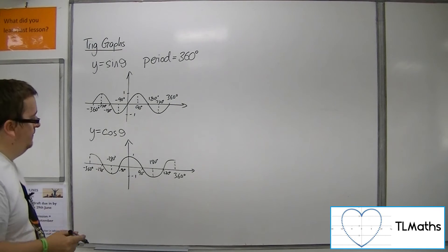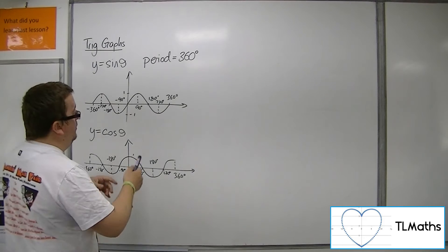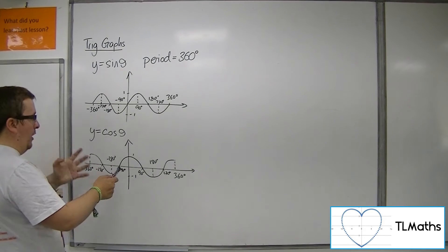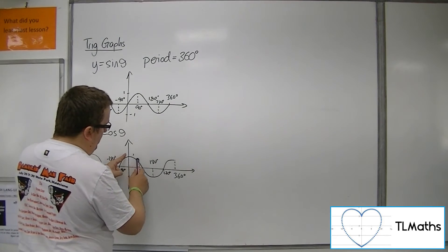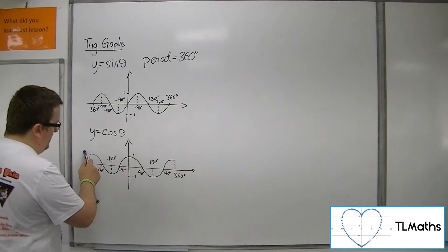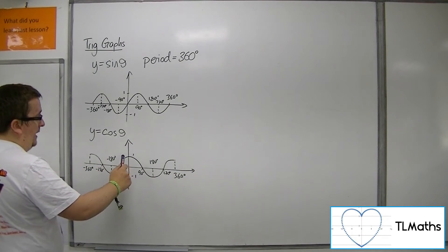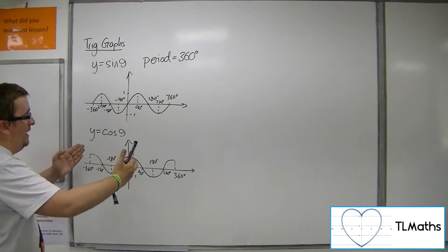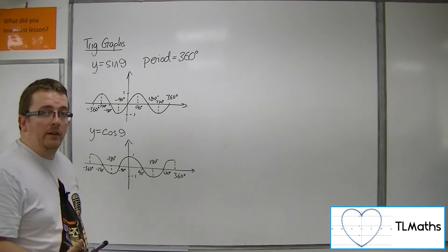Now this curve, the cosine curve, you can see that this piece is precisely the same as that piece. In fact, the cosine curve is just a translation of the sine curve.